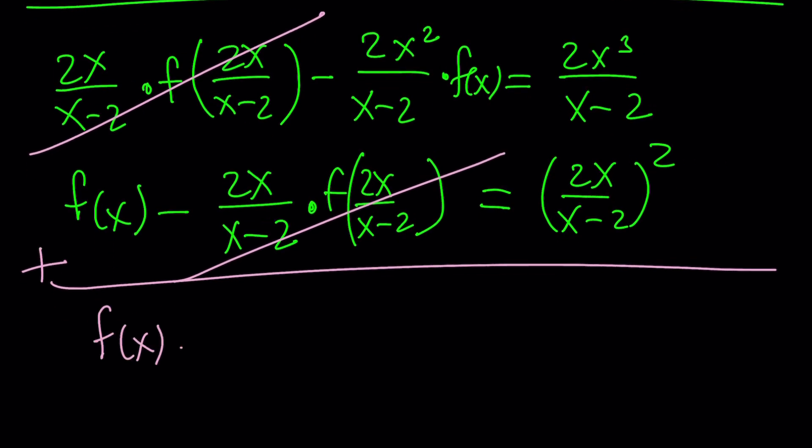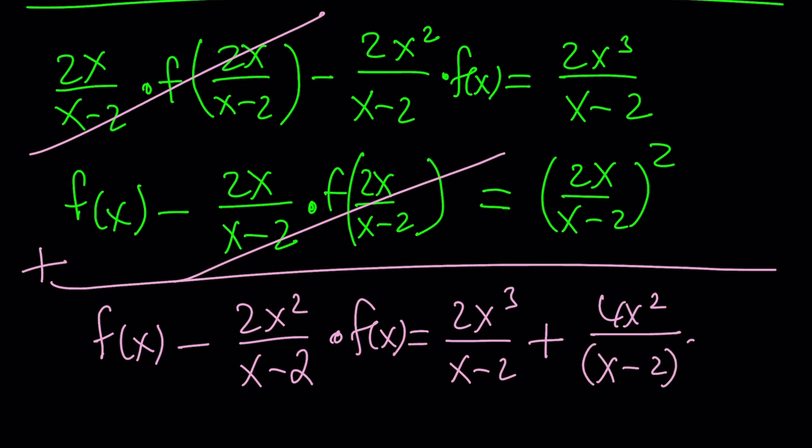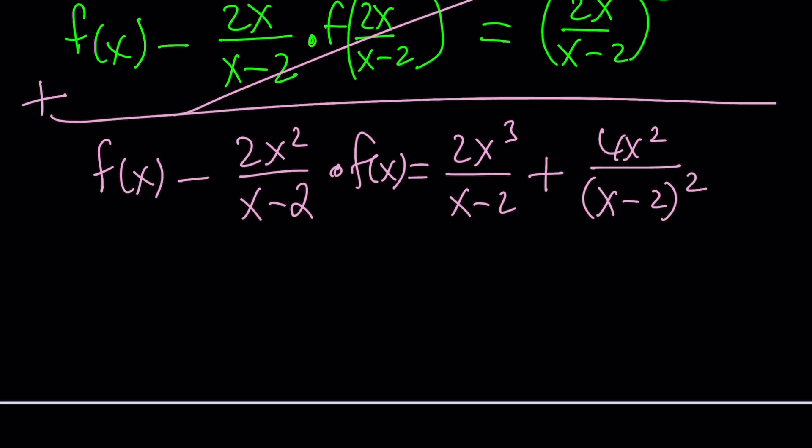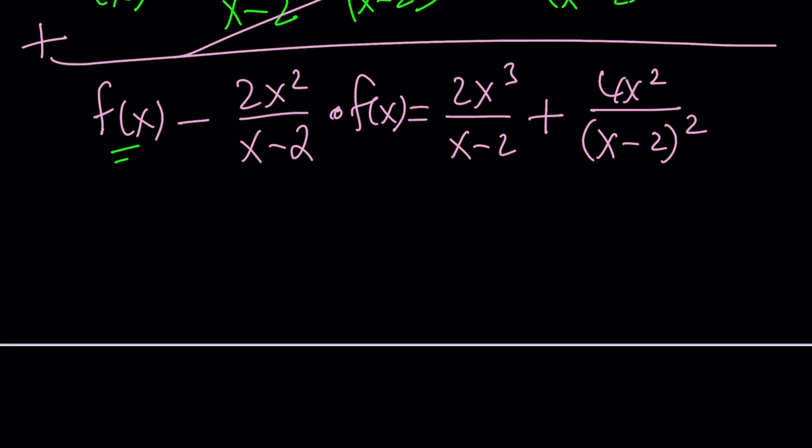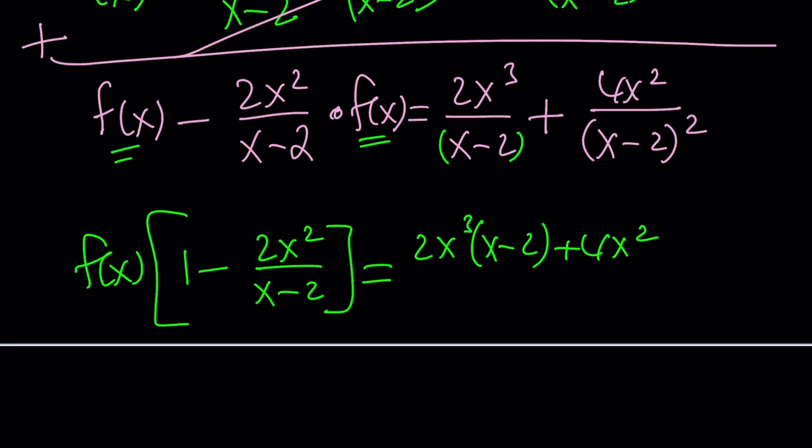And we end up with f of x minus 2x squared over x minus 2 times f of x equals 2x cubed over x minus 2. And now is probably a good time to square this, 4x squared over x minus 2 quantity squared, because I'm going to make a common denominator to make it look a little simpler. Now we have f of x here and f of x here. So let's go ahead and factor out f of x.